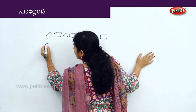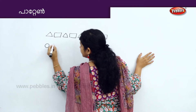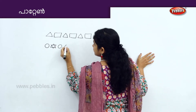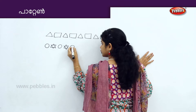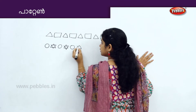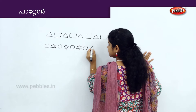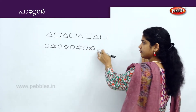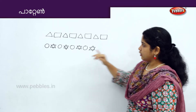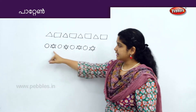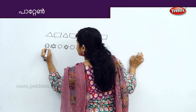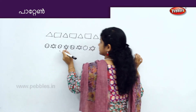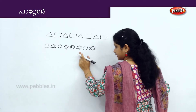One ball, a star. One ball, a star. One ball, a star. One ball, a star. Now this is the pattern. There are patterns. One ball, a star. This is the pattern. One ball, a star. One ball, a star. One ball, a star. One ball, a star.